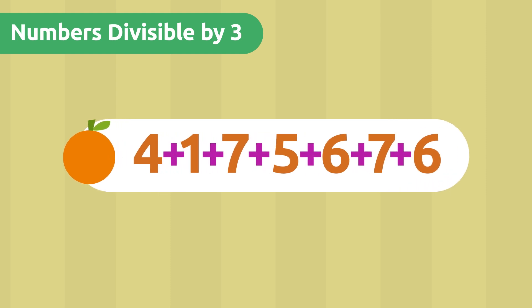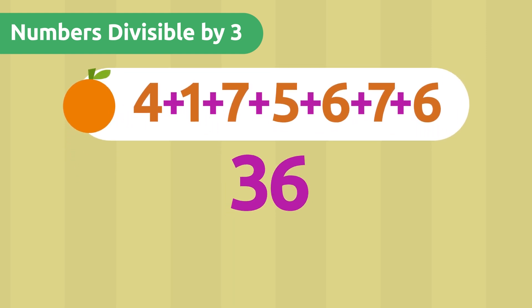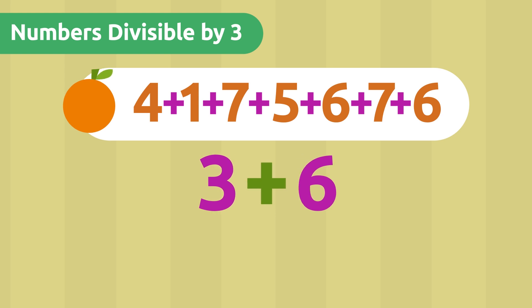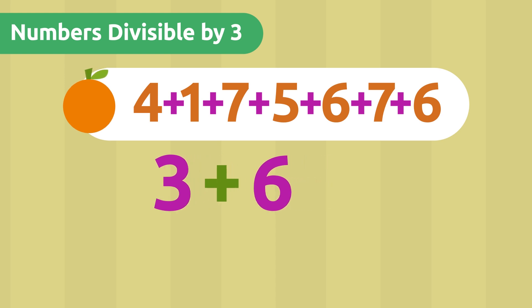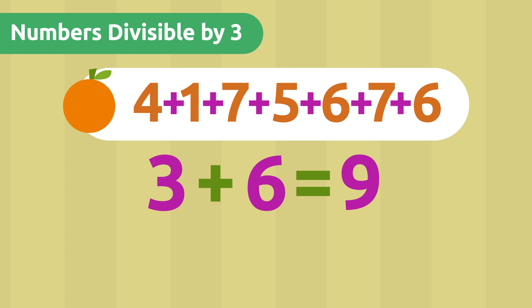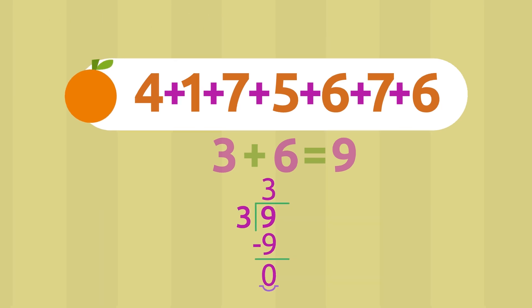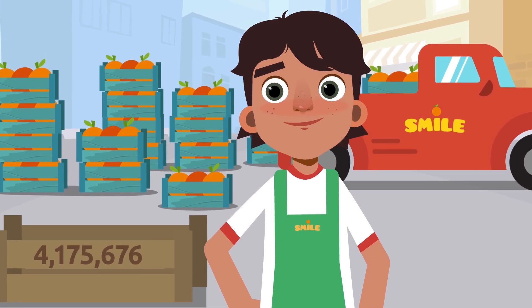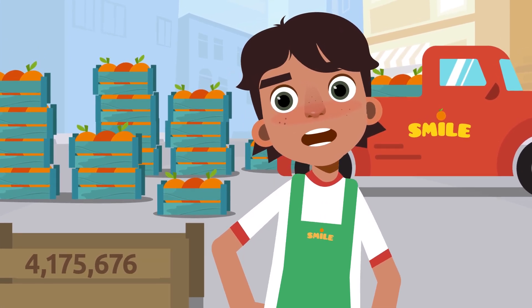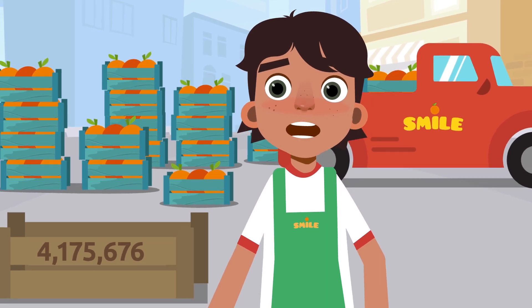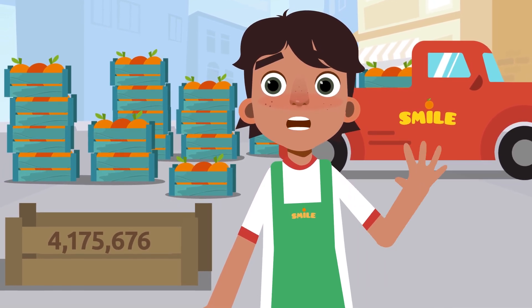When we added the number of oranges, we got 36. If we add up the digits of 36, we should have a number divisible by 3. Let's test our theory by adding its digits. 9 is a very small number, and we know that if we divide it by 3, the remainder will be 0. The divisibility rule of 3 is super fun because we can add digits as many times as we need. Isn't it very useful?